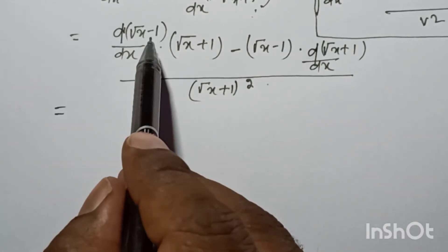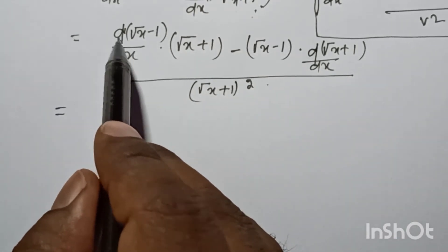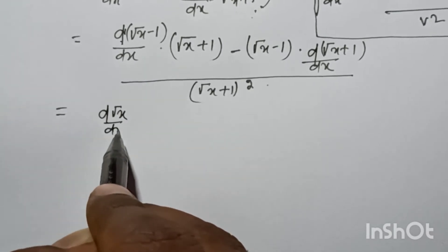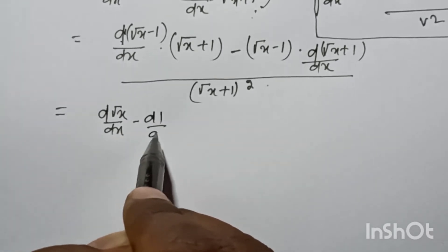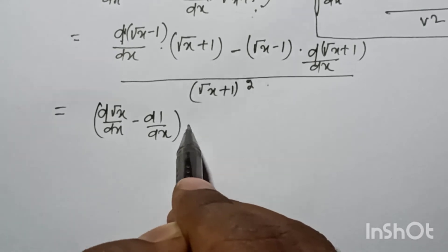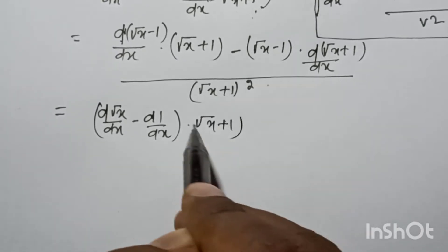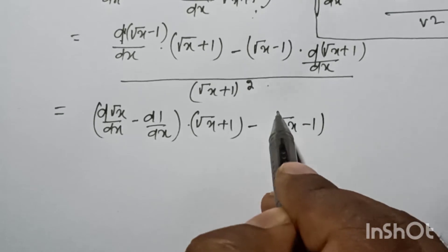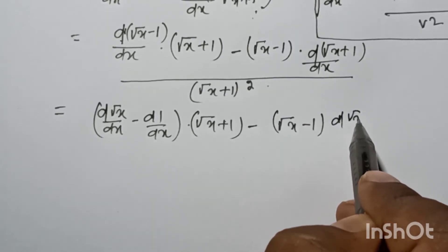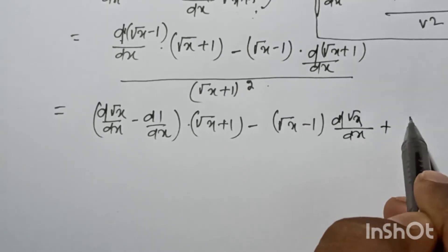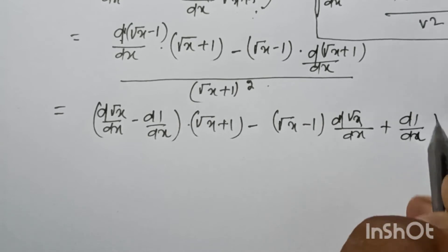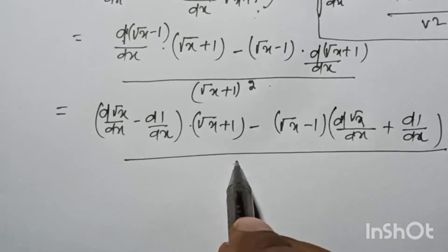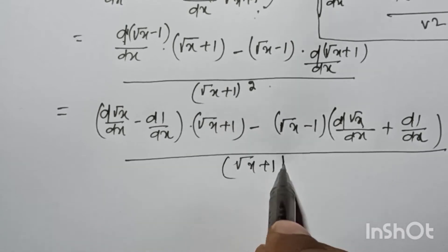Now we can write the derivative of root x by dx minus d of 1 by dx, into root x plus 1, minus root x minus 1 into d of root x by dx plus d of 1 by dx, the whole divided by root x plus 1 square.